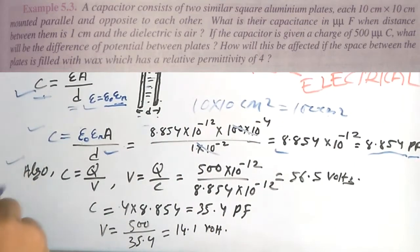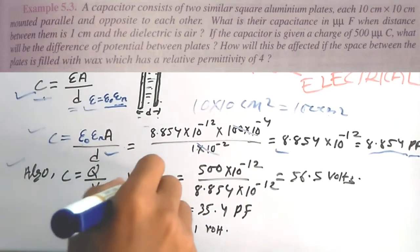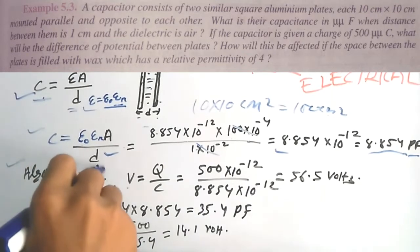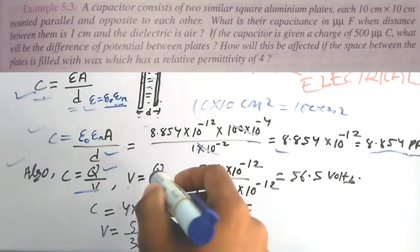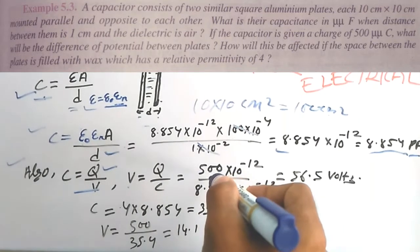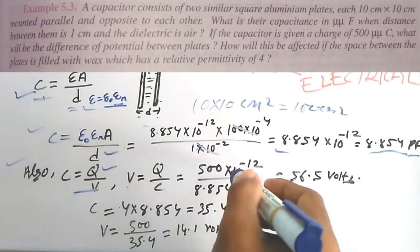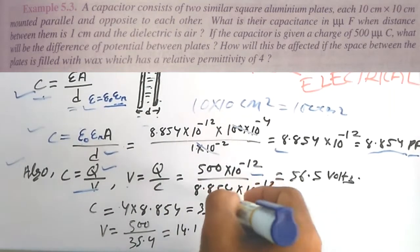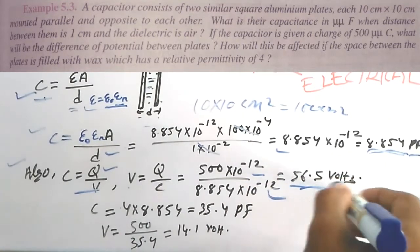To find the potential difference between the plates, V = Q / C. The charge Q is given as 500 picocoulombs = 500 × 10⁻¹² C. Dividing by C = 8.854 × 10⁻¹² gives V = 56.5 volts.